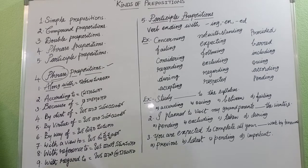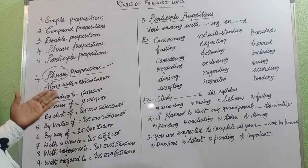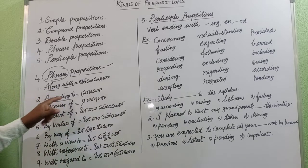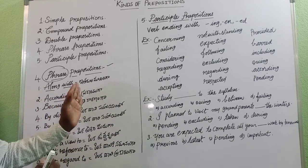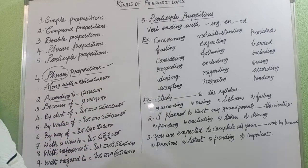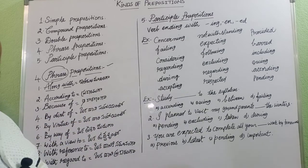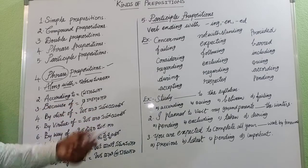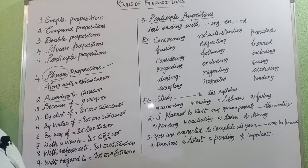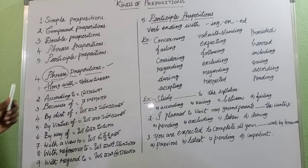'According to the syllabus, we have to prepare for the exam.' So 'according to' means as per. Next is 'because of' — 'Because of fever, I was absent yesterday.' So 'because of' is used to indicate a reason.